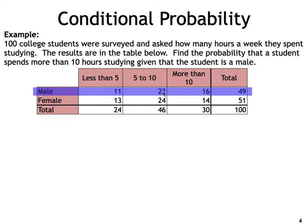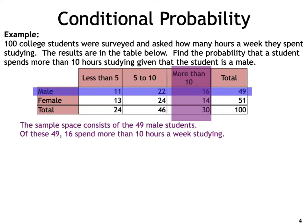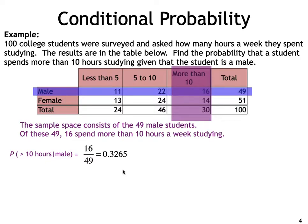Our condition is that the student is a male. Working on that assumption, of the male students, how many are studying more than 10 hours? By the intuitive approach, the new sample space is the 49 male students. Of the 49 male students, those studying more than 10 hours number 16. So the probability that the student is studying more than 10 hours given that the student is male is 16 out of 49, which equals 0.3265.